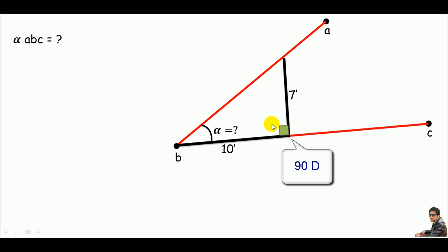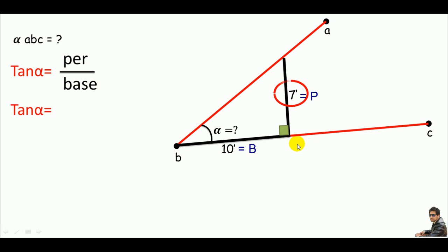Now, if you see, this is a right angle triangle. If you know a little bit about trigonometric ratios, the tangent of the given angle will be the ratio of perpendicular to its base. Remember, the perpendicular is 7 feet divided by the base of 10 feet.